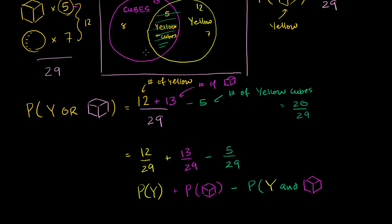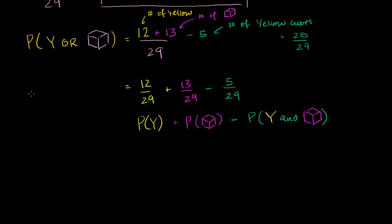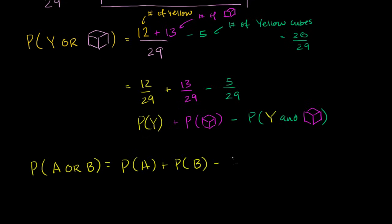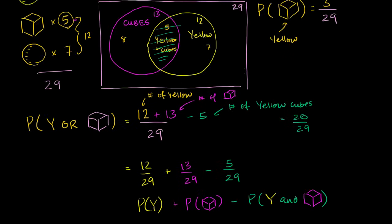This is a generalizable result. The probability of an object being a member of set A or set B equals the probability of A plus the probability of B minus the probability of both. This is called the addition rule of probability. You can't just add the two probabilities because they might overlap — doing so would double-count the overlap, so you must subtract it out.